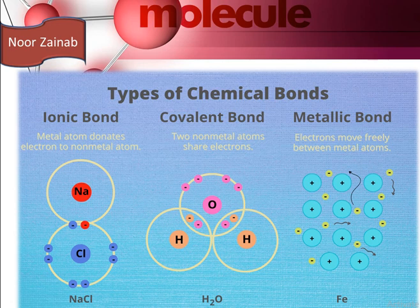During covalent bond formation, two non-metal atoms share electrons to complete their octet and duplet. For example, an oxygen atom will share electrons to complete its octet of eight electrons, and hydrogen will share one electron to complete its duplet. In metallic bonding, electrons form a sea of electrons that move freely between metal atoms.